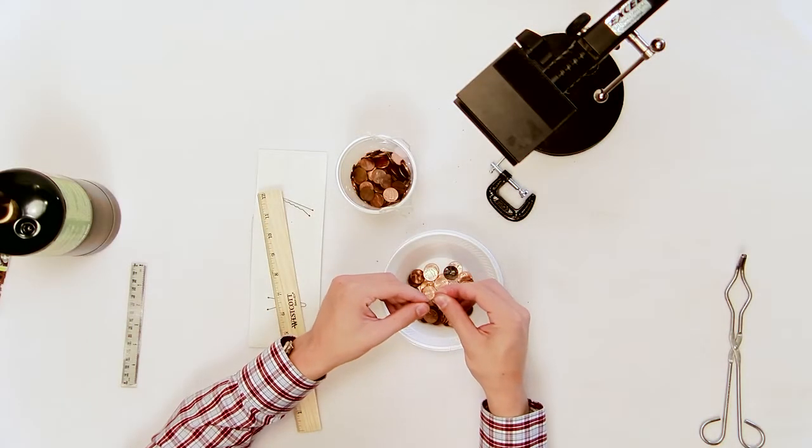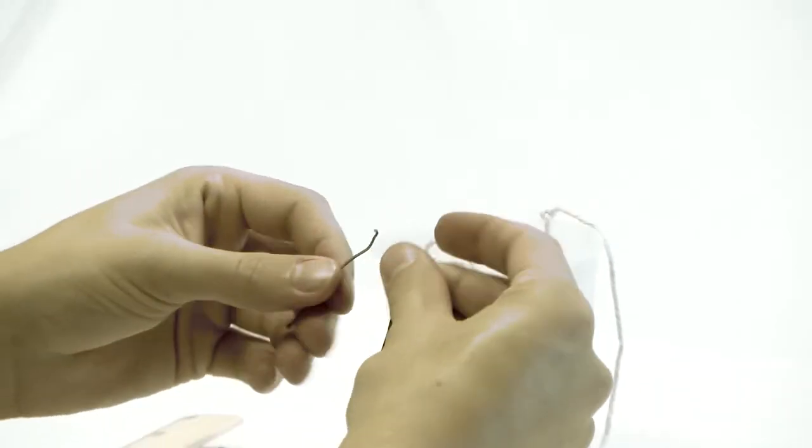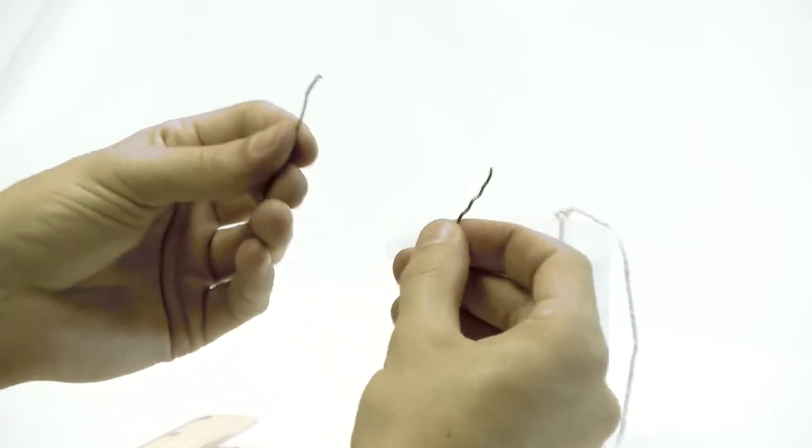Bend the annealed bobby pin back to its original position. The annealed bobby pin may break when you try to do this.